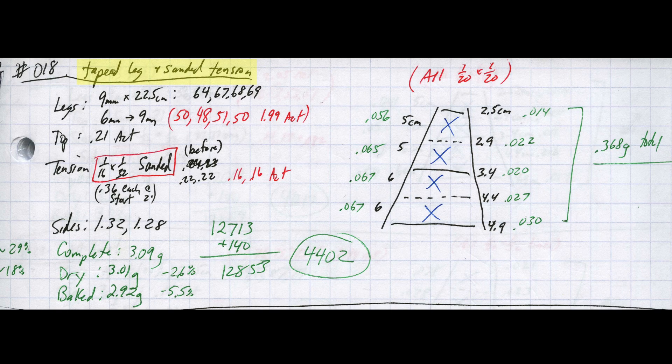Build number 18 turned out to be my second best overall result with an efficiency of over 4400. This bridge would have also placed second at nationals that year.